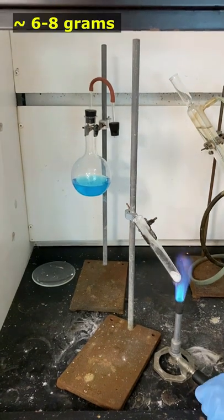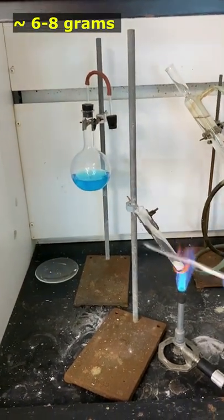When a small amount of potassium chlorate is heated in a Pyrex test tube, it melts.